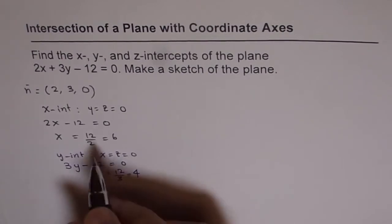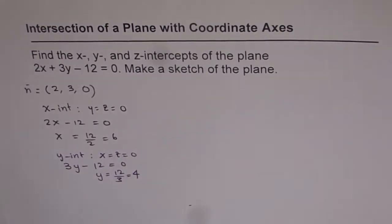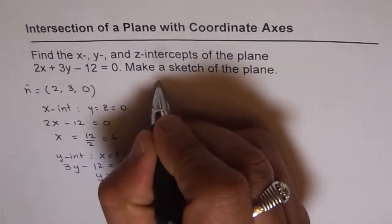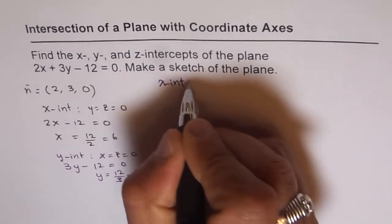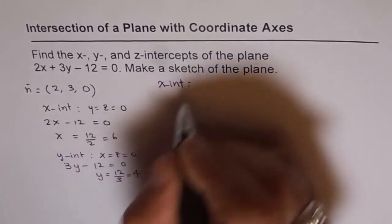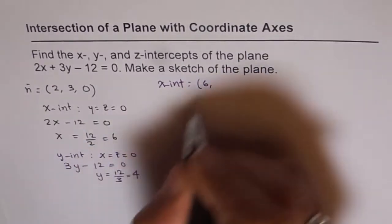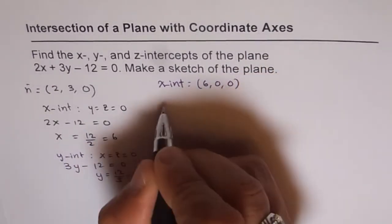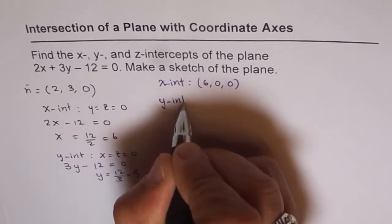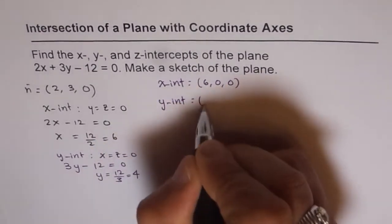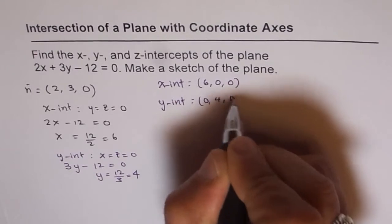So we get x and y intercepts as 6 and 4 respectively. We can write here x-intercept is 6, that means (6, 0, 0). And the y-intercept is 4, that means (0, 4, 0).